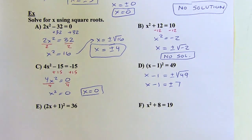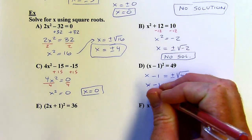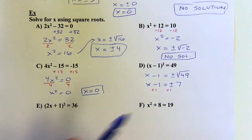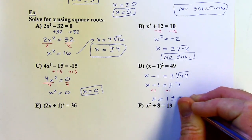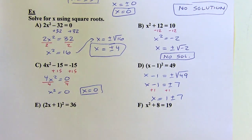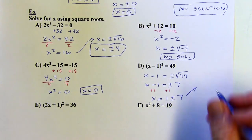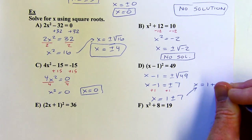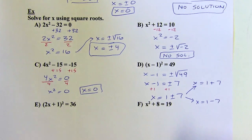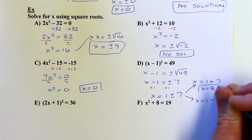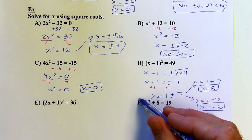Now I want to isolate x — I haven't solved this yet, I want to solve for x, not x minus 1. So I'm going to add 1 to both sides: x equals 1 plus or minus 7. I want to take it down the two different paths. x equals 1 plus 7, and x equals 1 minus 7. So 1 plus 7 is 8 — that's one solution. And 1 minus 7 is negative 6. There are my two solutions.